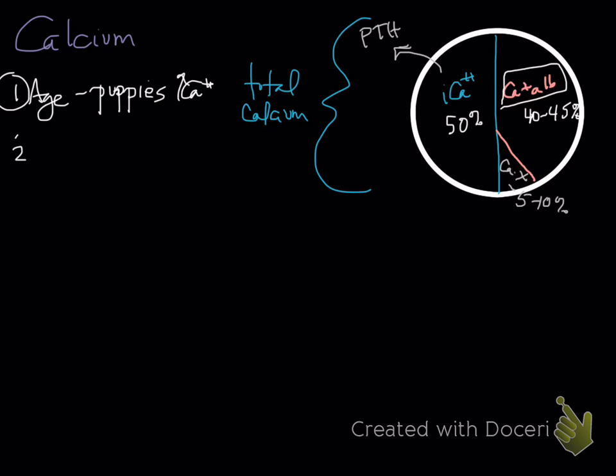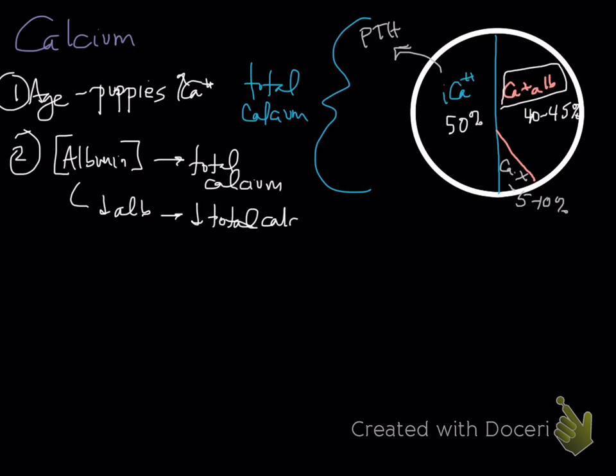The next, which I already mentioned, is how much albumin you have in your body. So our albumin concentration is going to determine our total calcium, but not our ionized calcium. Again, ionized calcium is free. So if we have decreased albumin, you can get a decrease in total calcium. So you have to consider that when you look at blood work.